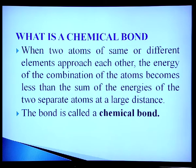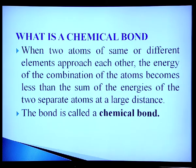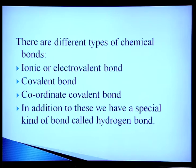The first question that arises is: what is a chemical bond? When two atoms of the same or different elements approach each other, the energy of the combination of the two atoms becomes less than the sum of the energies of the two separate atoms at a large distance. The bond so formed is called a chemical bond. There are different types: ionic or electrovalent, covalent bond, coordinate covalent bond, and a special kind called hydrogen bond.